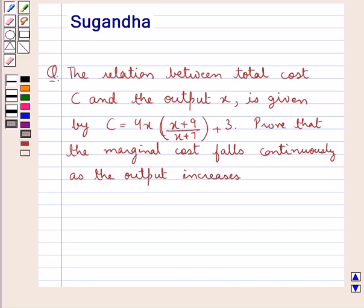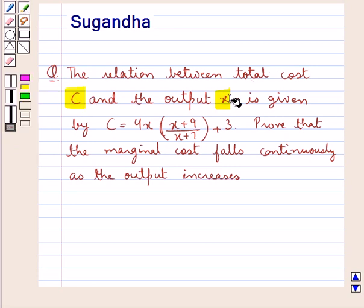Hello and welcome to the session. In this session we discuss the following question: the relation between total cost C and the output X is given by C = 4X(X + 9)/(X + 7) + 3. We have to prove that the marginal cost falls continuously as the output increases.